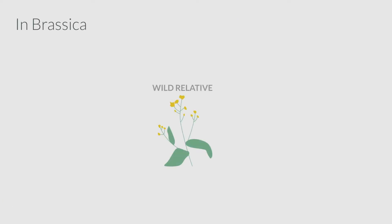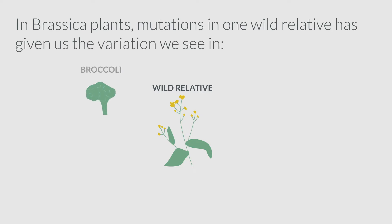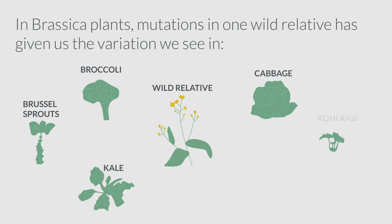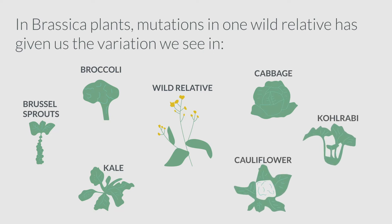In brassica plants, mutations in one wild relative has given us the variation we see in broccoli, Brussels sprouts, kale, cabbage, kohlrabi and cauliflower.